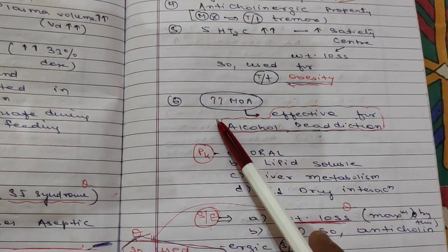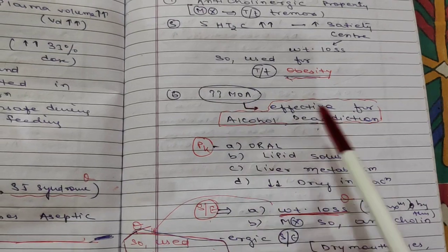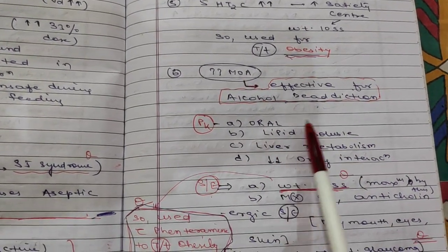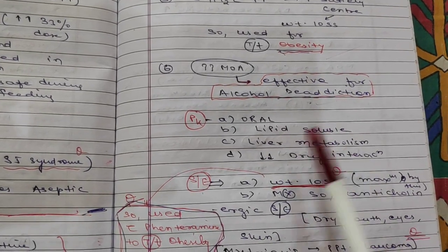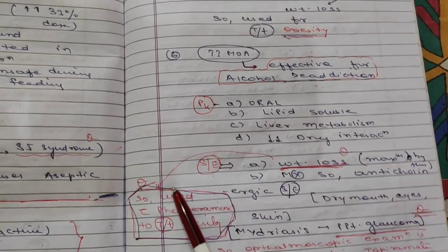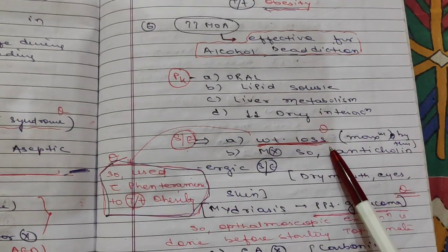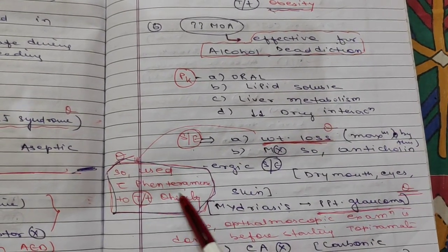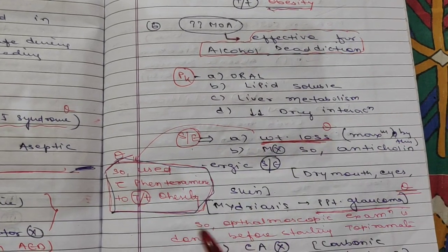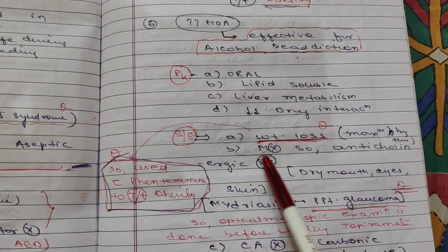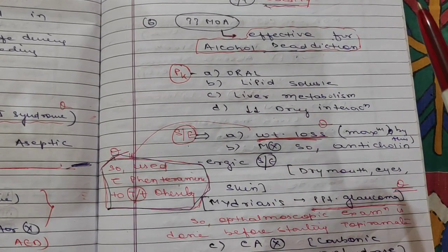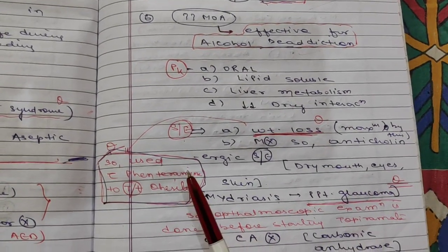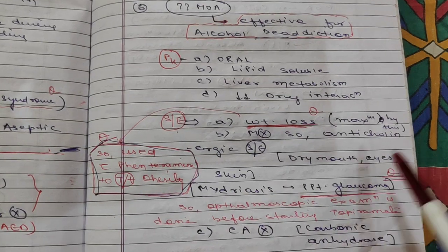By some unknown mechanism, topiramate is also effective for alcohol de-addiction. Pharmacokinetics: it can be given orally, is lipid soluble, liver metabolism is involved, and it has fewer drug interactions. Side effects include weight loss — it is used with phentermine to treat obesity — and due to its anticholinergic (muscarinic receptor blocking) property, side effects include dry mouth, dry skin, and mydriasis.